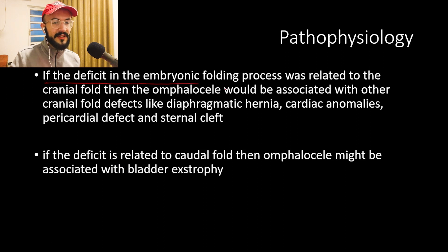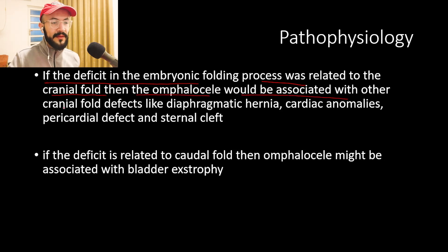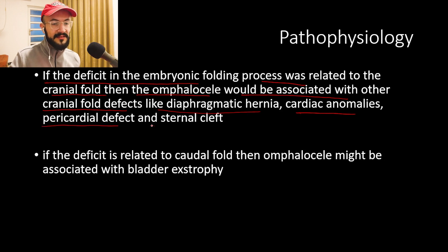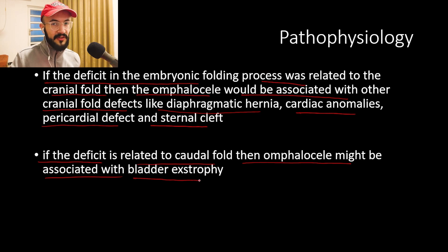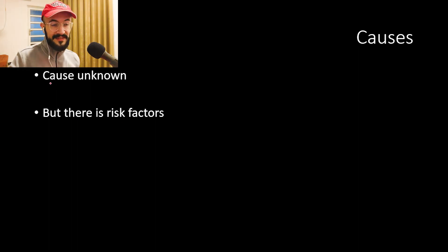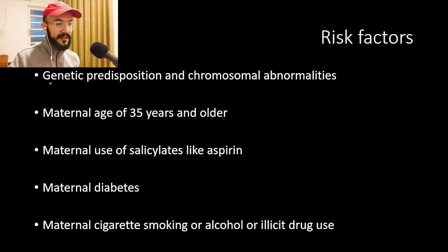If the deficit in embryonic folding is related to the cranial fold, the omphalocele would be associated with cranial fold defects like diaphragmatic hernia, cardiac anomalies, pericardial defects, and sternal cleft. If the deficit is related to the caudal fold, the omphalocele may be associated with bladder exstrophy.